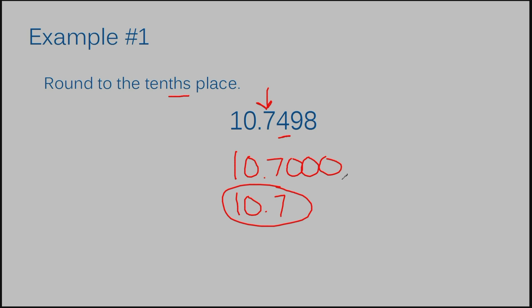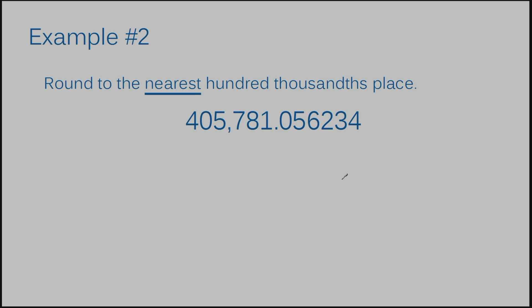Let's move on to example number two. Round to the nearest hundred thousandths place. This number looks enormous, but does that really matter? Nope. All we need to know is what our directions want us to do — they want us to round to the hundred thousandths place. To the right of my decimal I have the tenths place, then the hundredths place, then the thousandths place, ten thousandths, then the hundred thousandths. The three is in the position where we want our number to be rounded to — this should be the last number in our rounding.